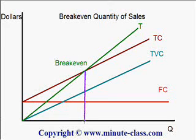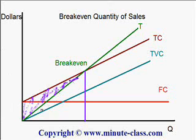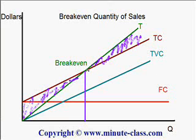If we sell a quantity which is less than the break-even point, then we will record a loss — the less we sell, the more is the loss. However, if we sell a quantity more than the break-even point, then we will record a gain, or net profit. The break-even point is the point at which the net profit equals zero.